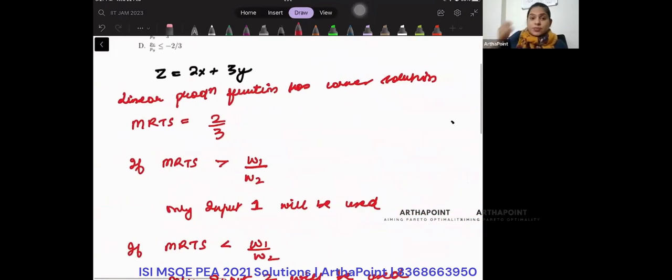Now look at this question. You are given Z equals 2x plus 3y. What is your MRTS? It is MPx by MPy, so it will be 2 by 3.